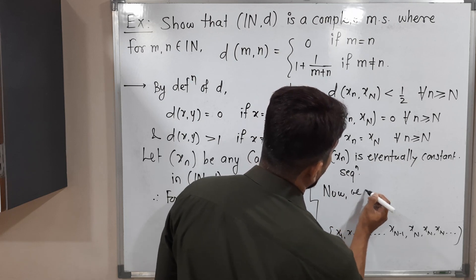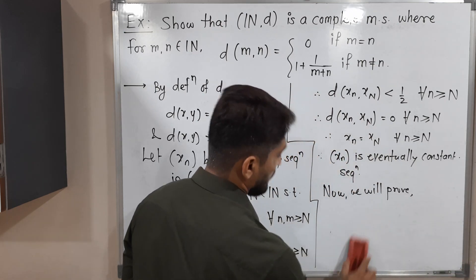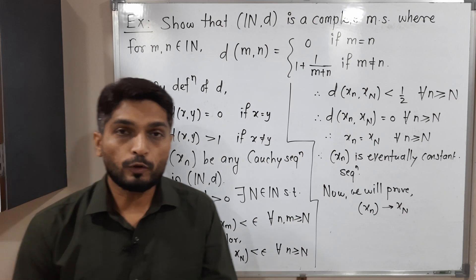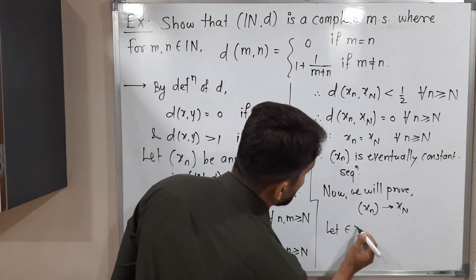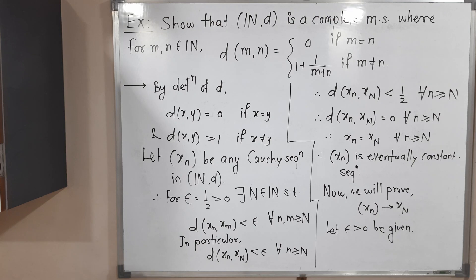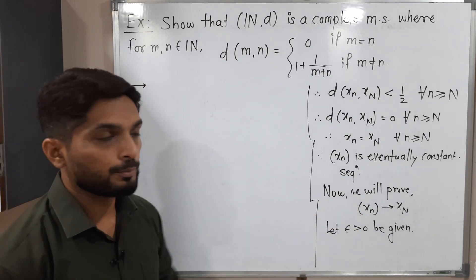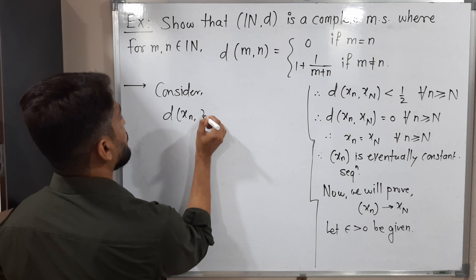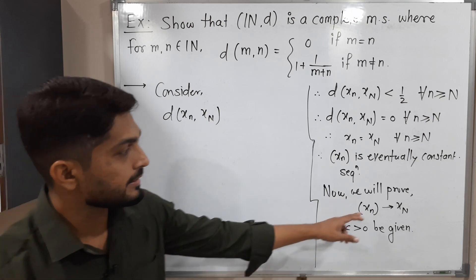Now we will prove that X_n converges to X_N using the epsilon definition. Let ε > 0 be given. We consider D(X_n, X_N). If we can prove it is less than ε, then by the definition of a convergent sequence, we can say X_n converges to X_N.